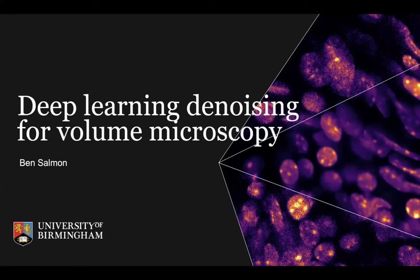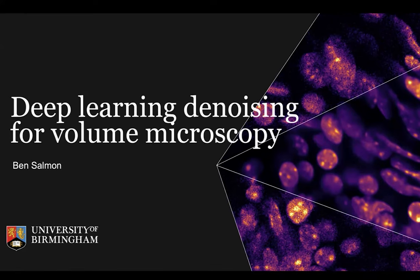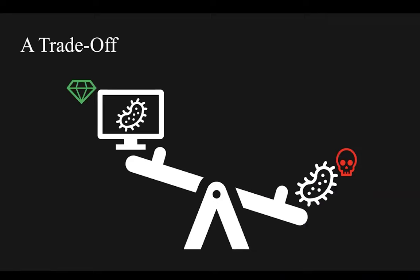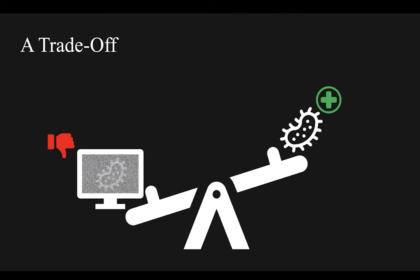Thanks Erin. I'm Ben from the University of Birmingham, and I'm going to walk through some of the key developments in deep learning for denoising in microscopy. Then, as Erin said, Chad will demonstrate some of these approaches on real electron microscopy data. Microscopists are often faced with a trade-off: image quality versus sample damage. High photon or electron doses give us crisp clean images but often damage samples. Low doses preserve the sample but result in noisy images. Sometimes experimental constraints force us to work with low doses and deal with noise in a post-processing step known as denoising.